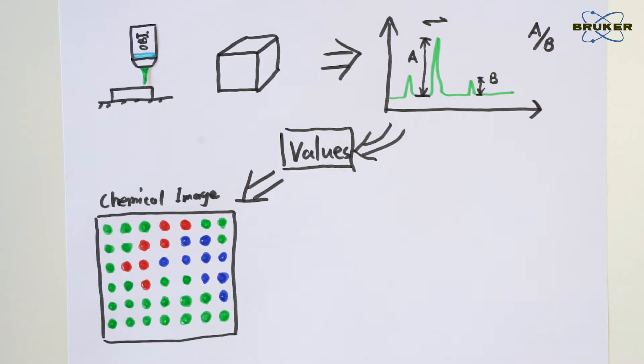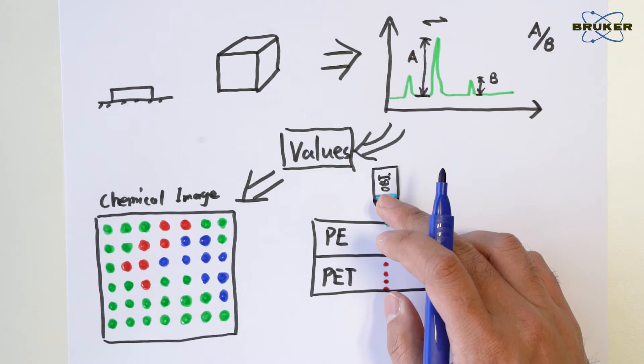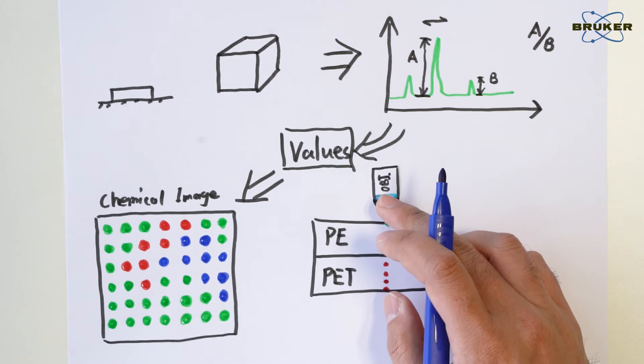They are also called chemical images, as they visualize the chemical information of a sample. A very simple example would be a multi-layer polymer film made of colorless PE and PET. While you are not able to see very much in the visual image, in a Raman image, you can identify the layers chemically and display PET in red and PE in blue.